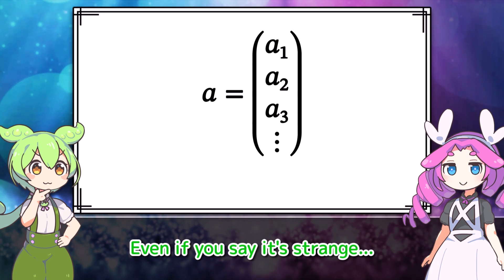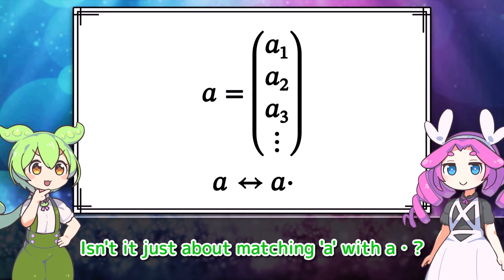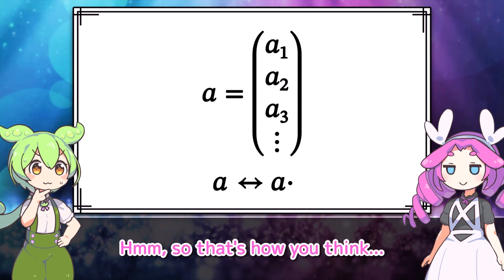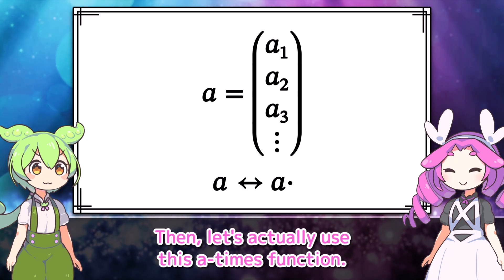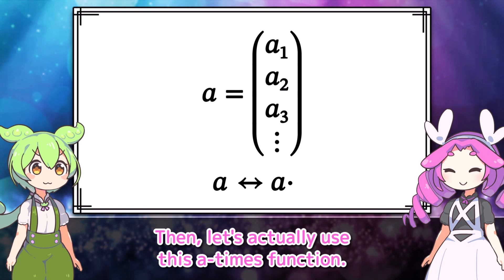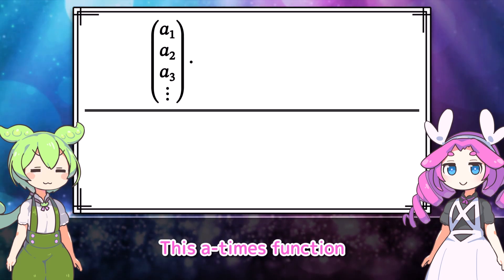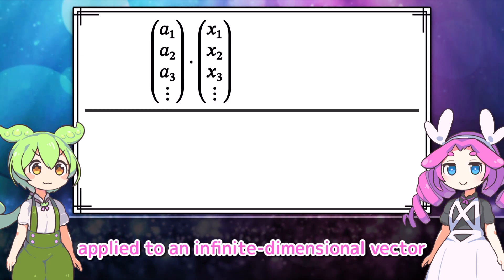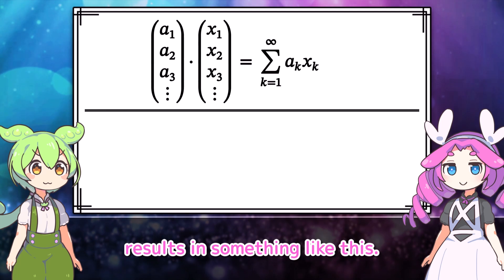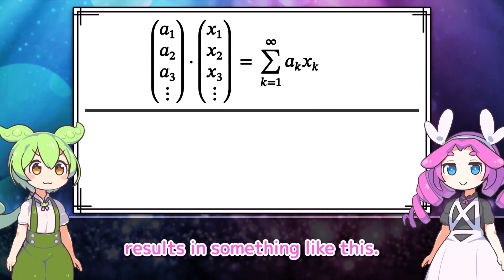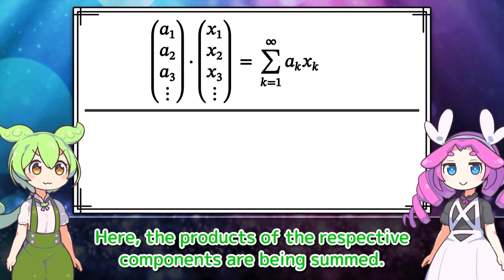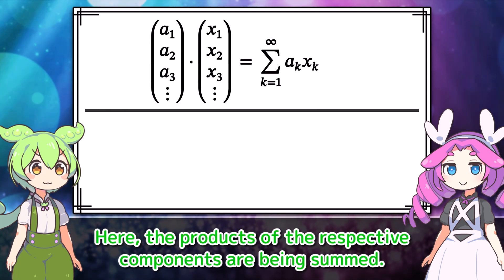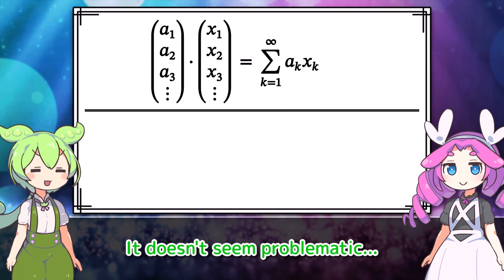Even if you say it's strange, isn't it just about matching A with A·dot? So that's how you think. Then let's actually use this A times function. This A times function, applied to an infinite-dimensional vector, results in something like this. Here, the products of the respective components are being summed.